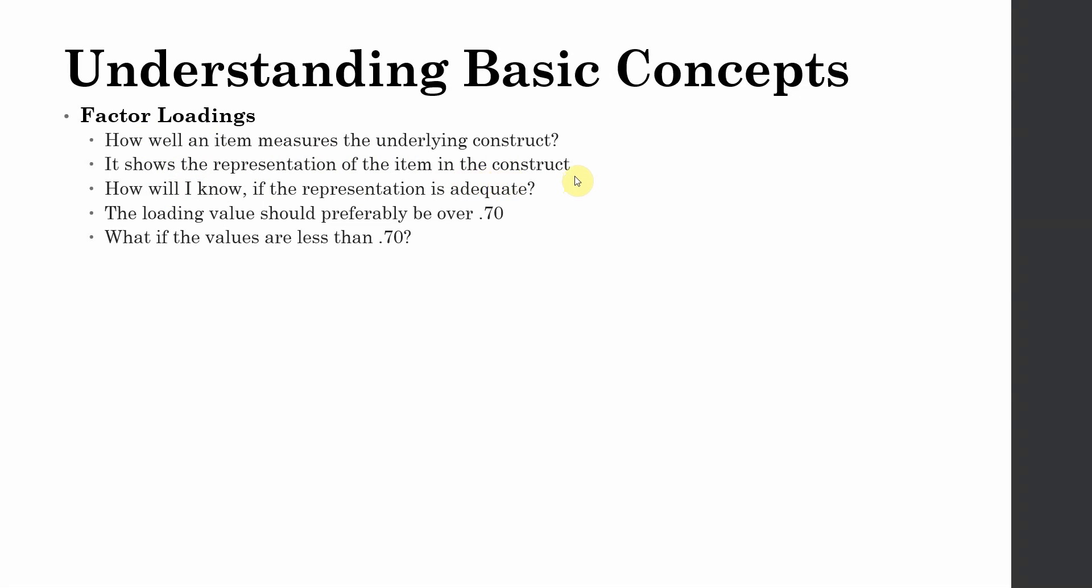It shows the representation of the item in the construct, or that is your latent construct represented by the blue circle. How will I know if the representation is adequate? These items are representing or loadings will help you identify whether that particular item is representing the underlying construct or not. How will I know that the representation is adequate? The loading value should be over 0.70.